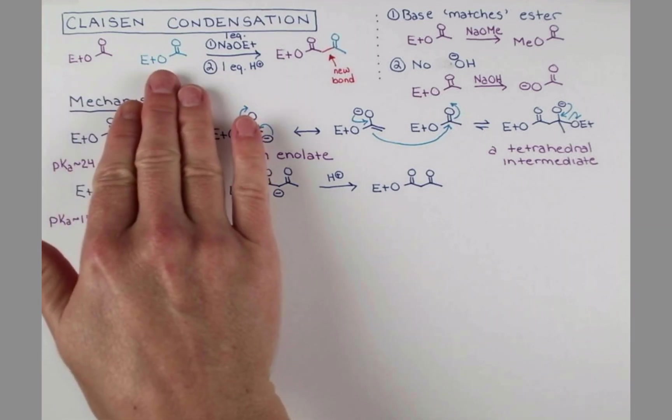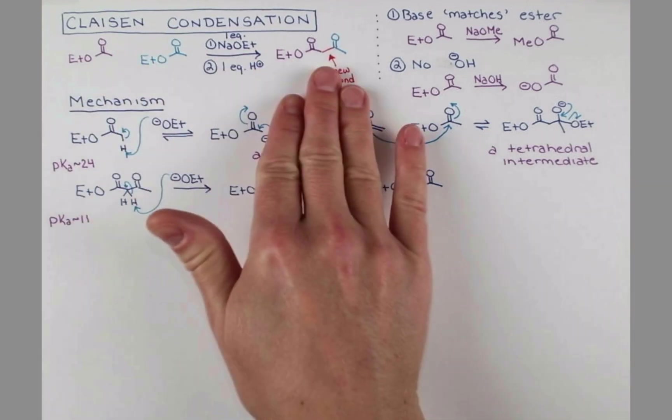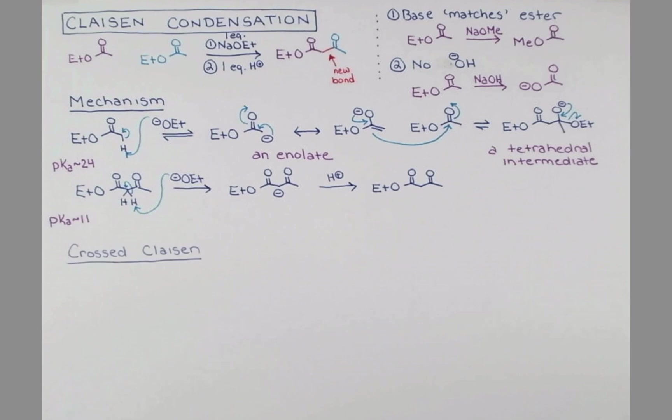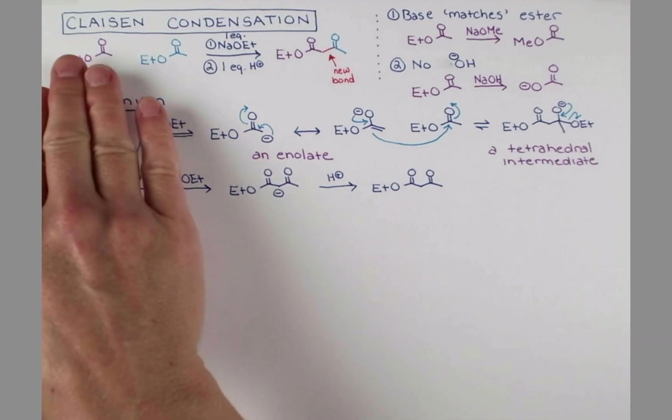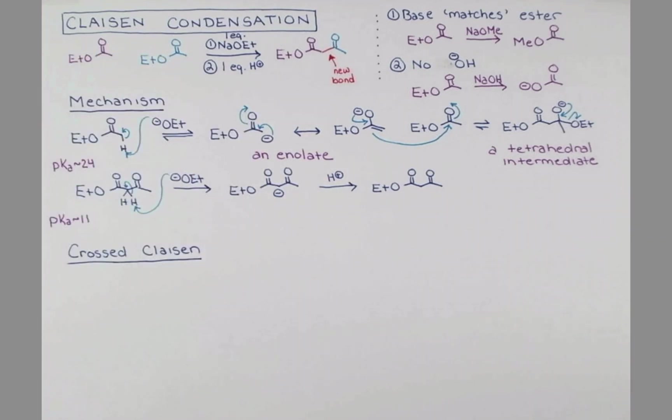In this example, the same substrate reacted twice to form our product. The crossed Claisen would be where we have two different esters as starting materials. Now, this reaction isn't super synthetically useful, but in case you encounter it, I want to show you some examples of substrates that could potentially undergo the crossed Claisen.